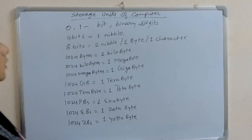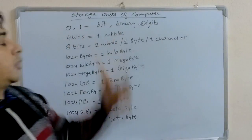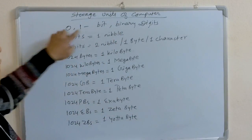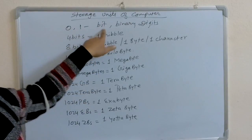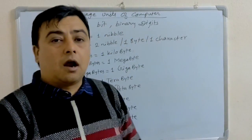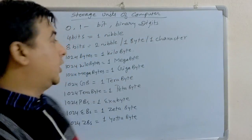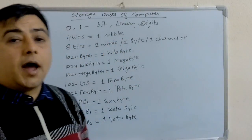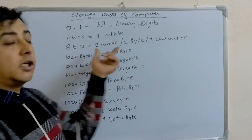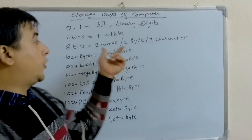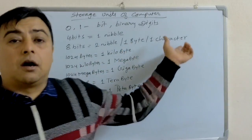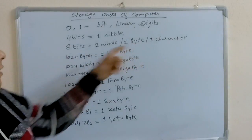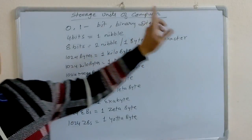So, the storage units of computer are as follows. 0 and 1 is known as bit or binary digit or machine code. 4 bits is equal to 1 nibble. 8 bits is equal to 2 nibbles, 1 byte or 1 character.